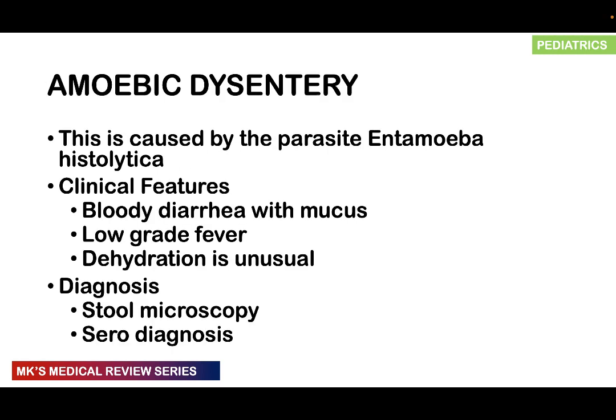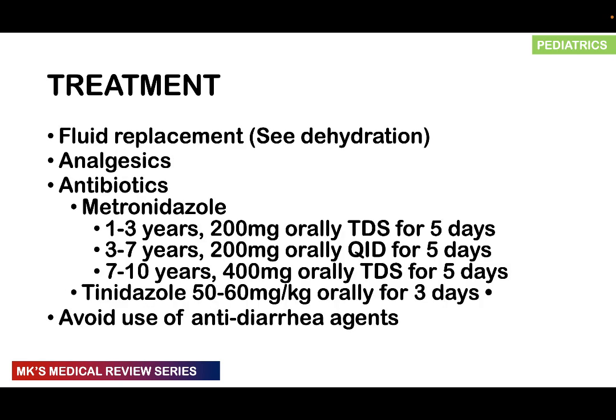Amoebic dysentery is often caused by the parasite Entamoeba histolytica. Patients will have bloody diarrhea with mucus and may have a low-grade fever; dehydration is usually unusual. Diagnosis is made through stool microscopy, and sometimes serodiagnosis. Treatment includes fluid replacement and analgesia, as well as antibiotics like metronidazole.